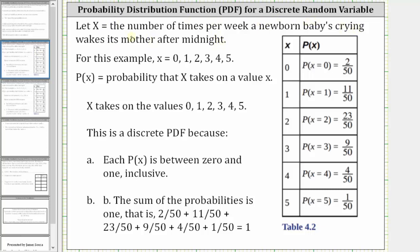For this example, x is equal to zero, one, two, three, four, and five. This is the number of times the newborn baby's crying woke the mother after midnight in one week. And p of x is equal to the probability that the random variable x takes on the value of little x.